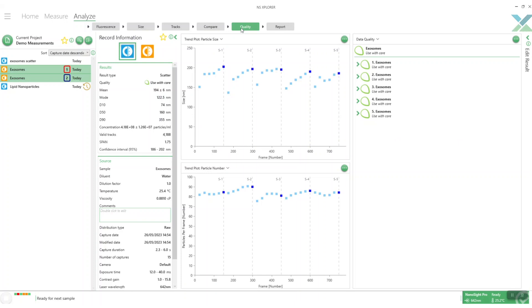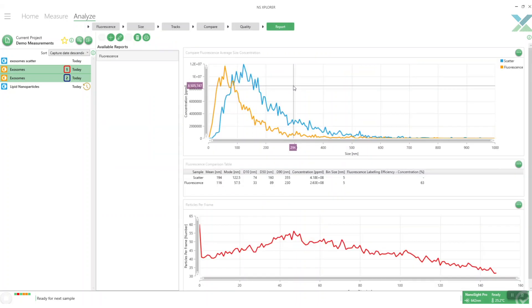We've also got our quality page so here we can look at things like our data quality guidance giving us an idea of if we've got any possible issues with the measurement if there's anything we can do to improve them. Finally we've got our report page where we can customize a report and use it to print it off as a PDF.